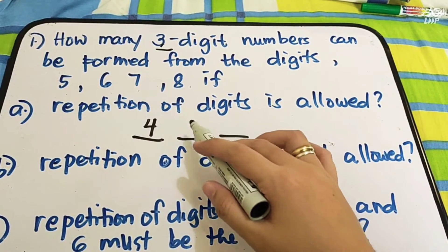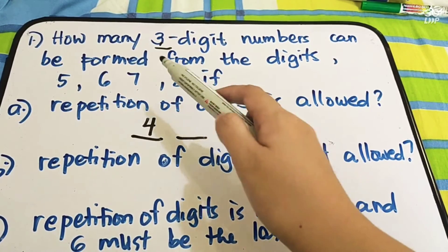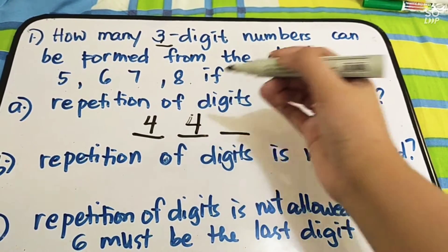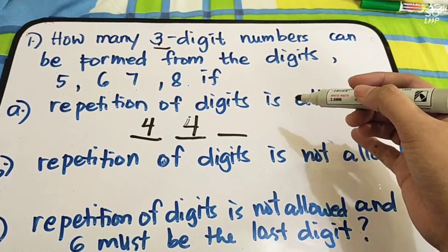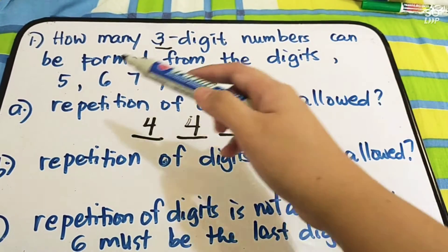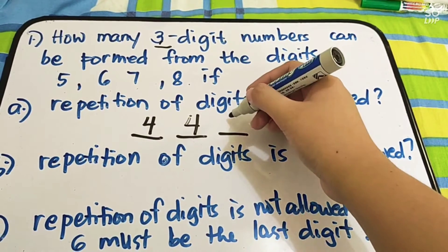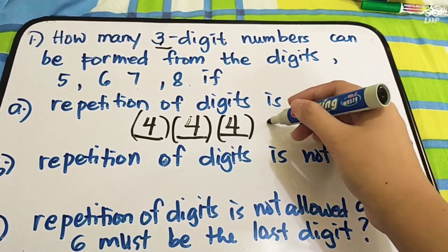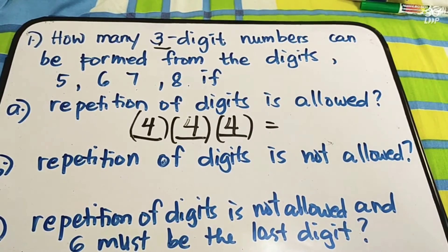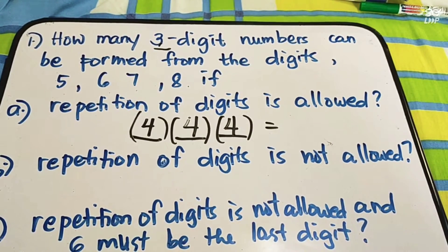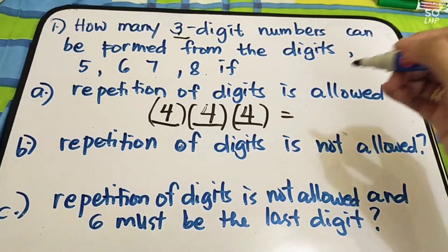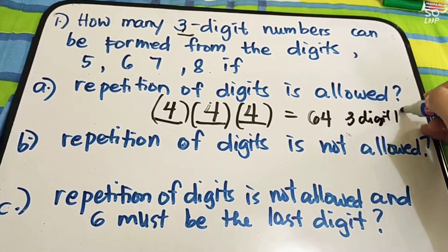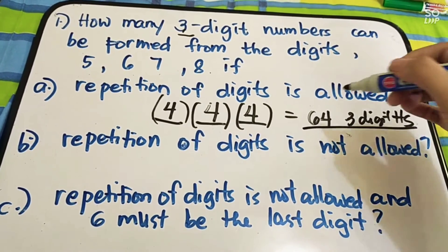For the second digit, repetition is allowed ulit, so pwede ulit si five, six, seven, and eight — ilan yung digit ang pwede? We have four pa rin. And for the last digit, repetition is allowed again — pwede si five, six, seven, and eight. So, we have four times four times four, which gives sixty-four. We have sixty-four three-digit numbers.